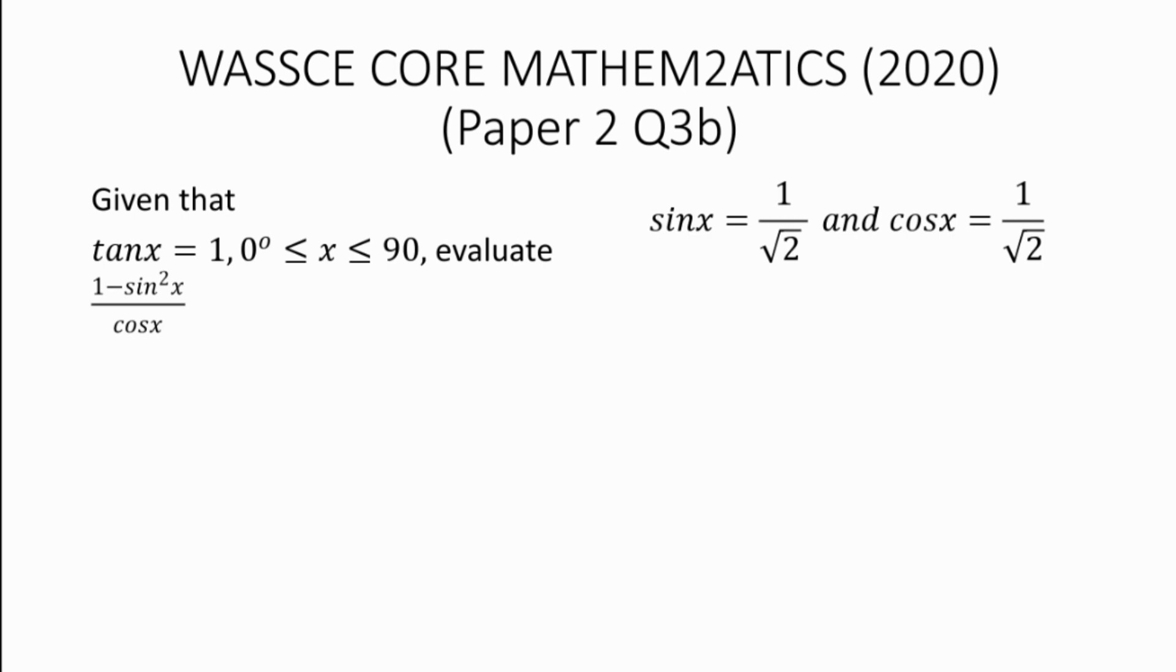So we have sin x, which is equal to the length of the opposite side over the length of the hypotenuse side, which is 1 over root 2. And cos x equals the length of the adjacent side over the length of the hypotenuse side, which is equal to 1 over root 2.